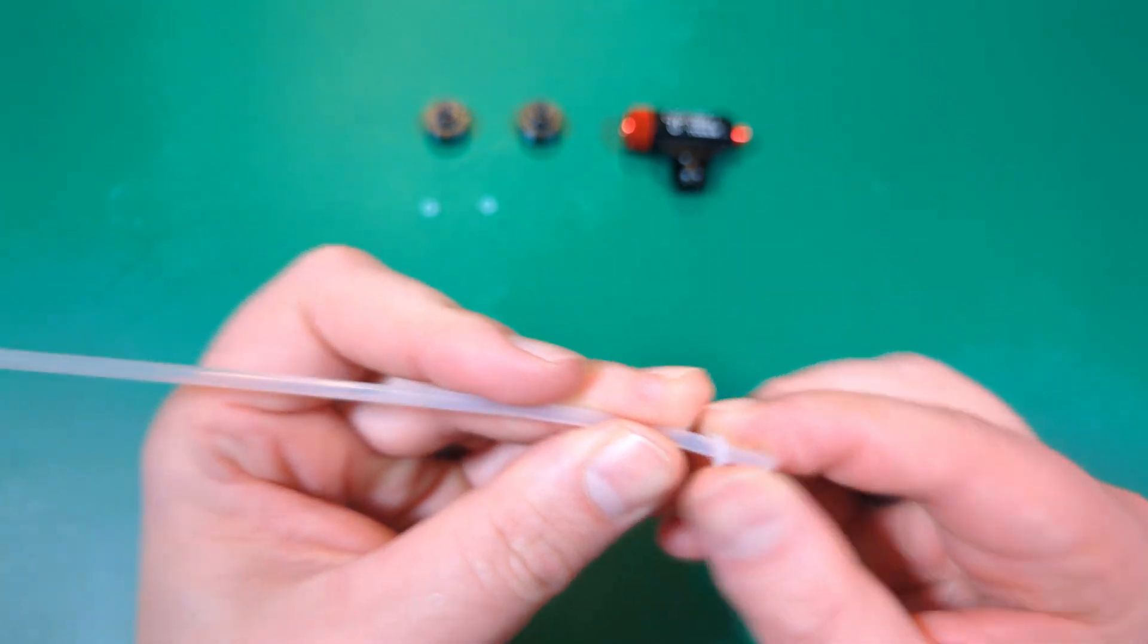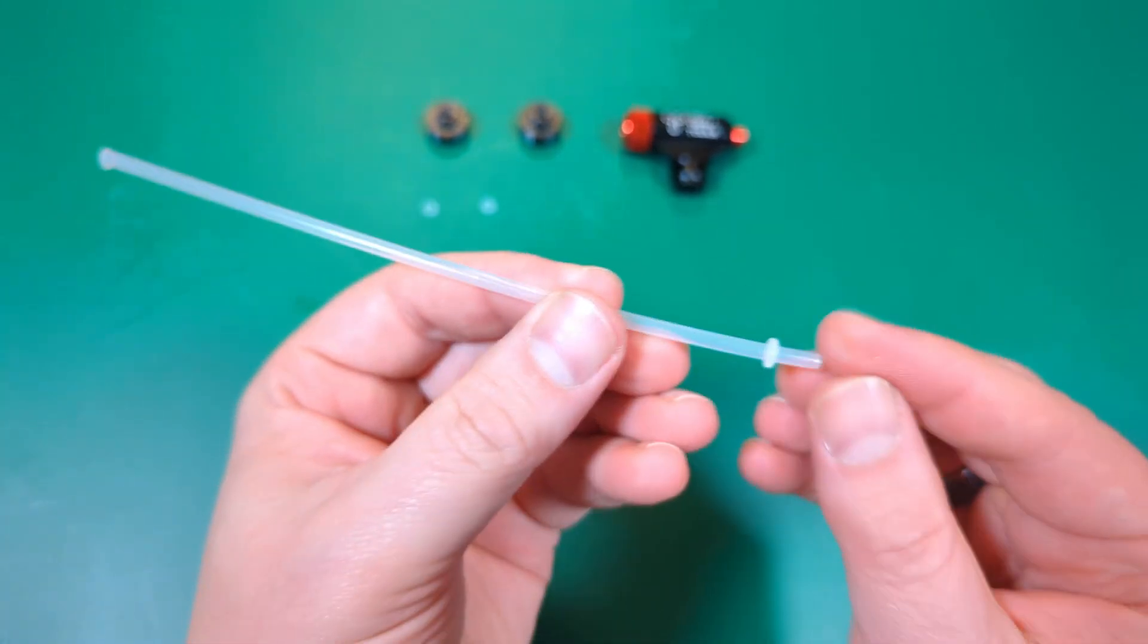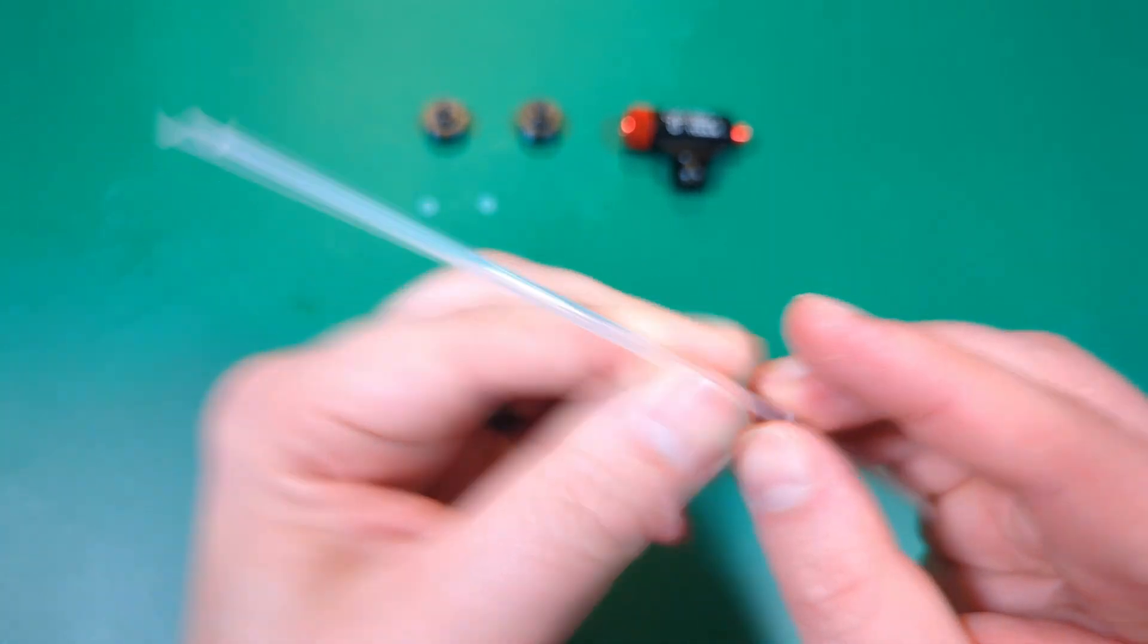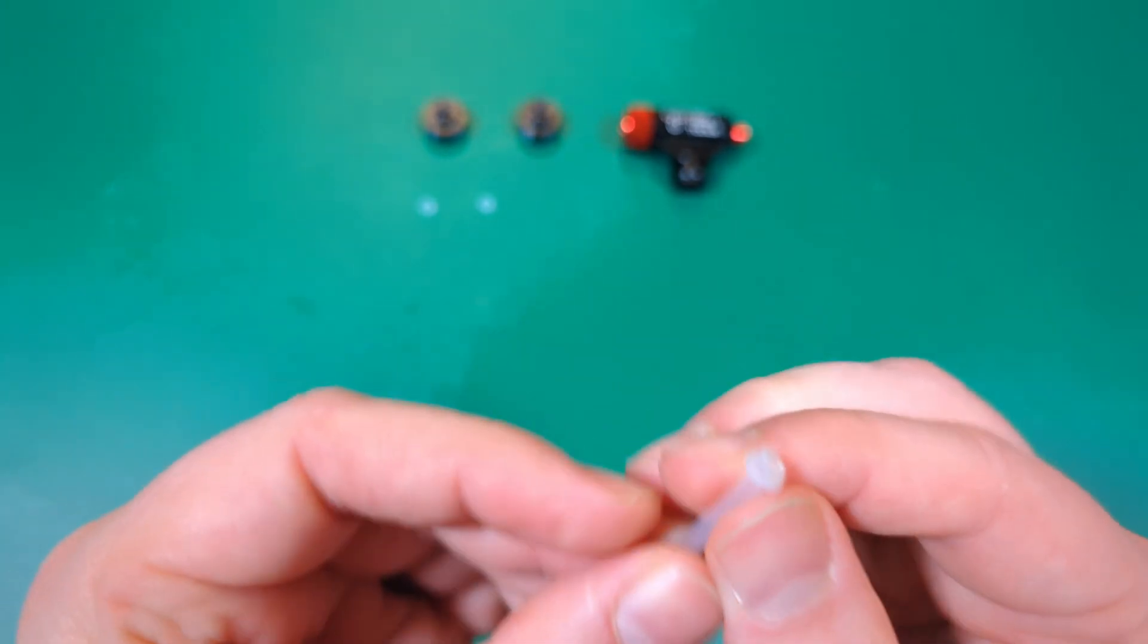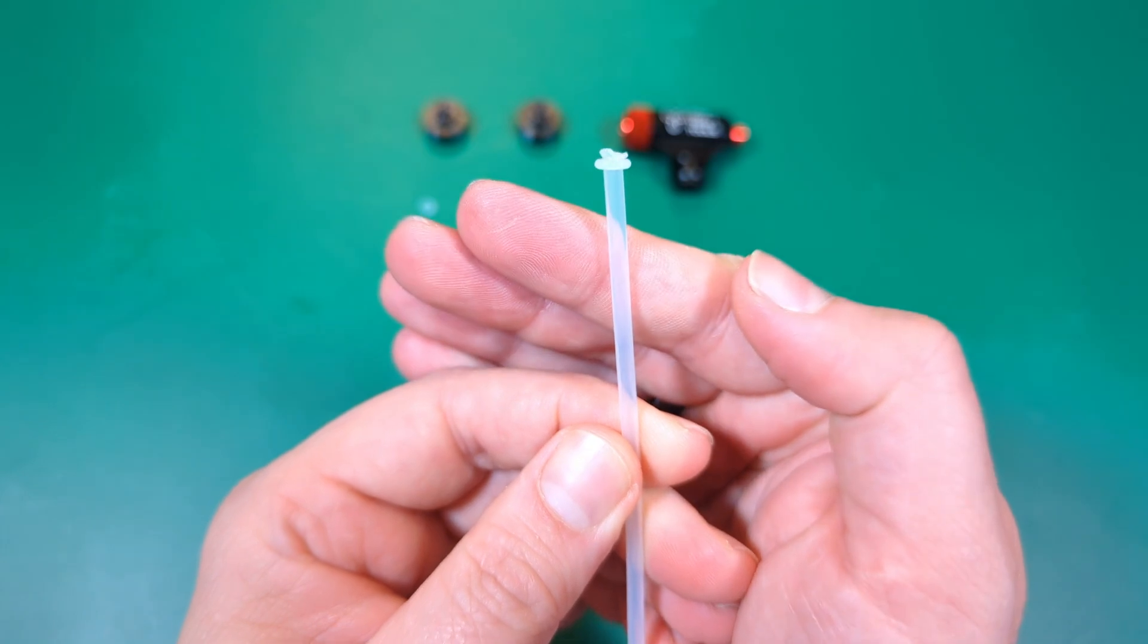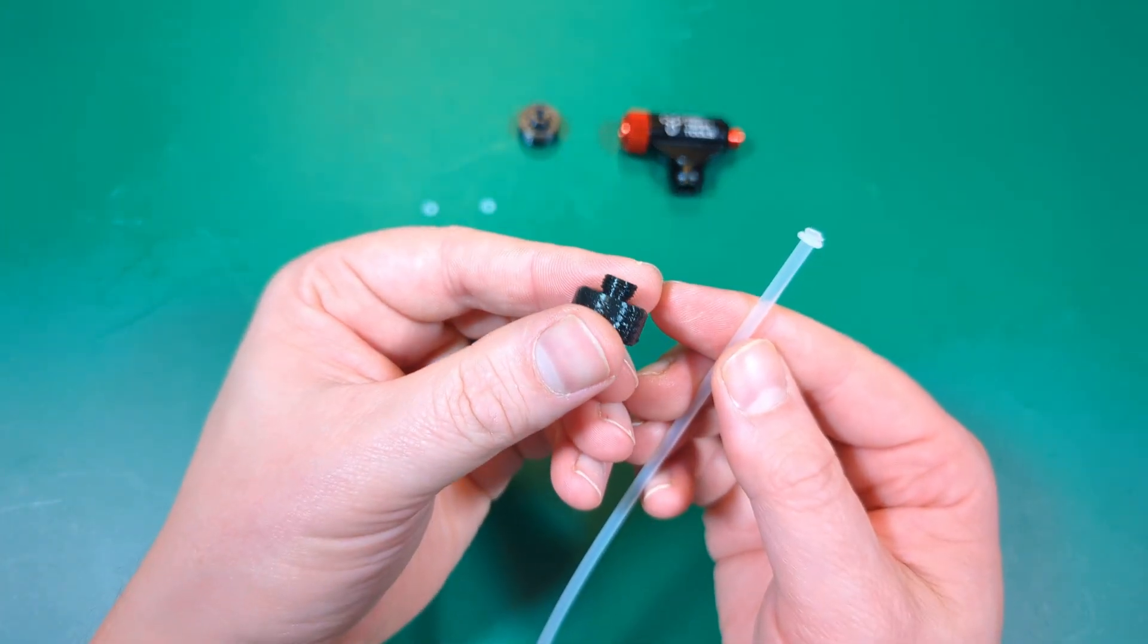Go ahead and take your O-ring. Now, sometimes the O-rings will be black, sometimes they'll be white in the kits. That should snug down pretty nicely. And now this is ready to be installed in the nozzle adapter.